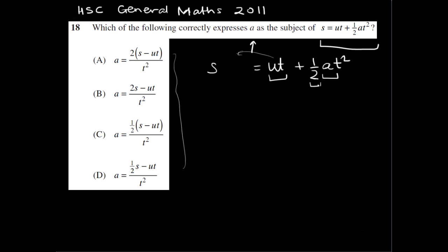So I'm going to deal with ut first. I'm going to remove ut from the right-hand side by subtracting ut. And what I do on the right-hand side, I must do to the left-hand side. So I'm going to take away ut from S.